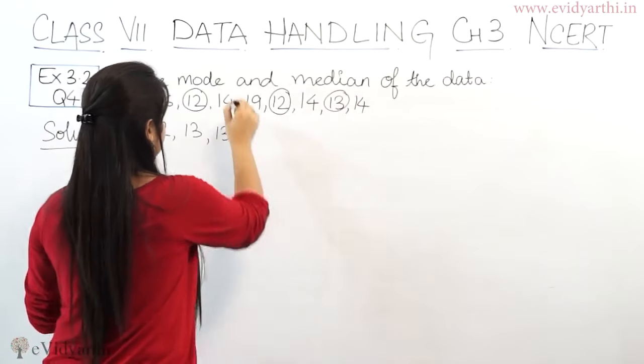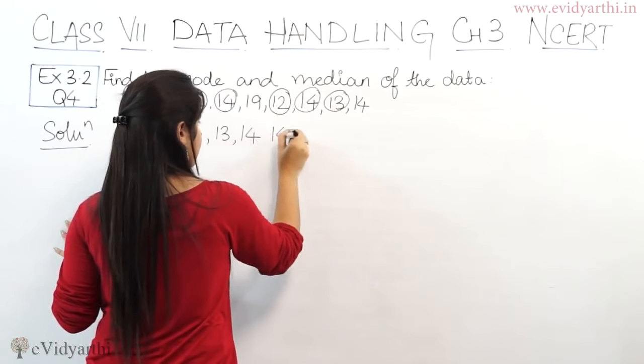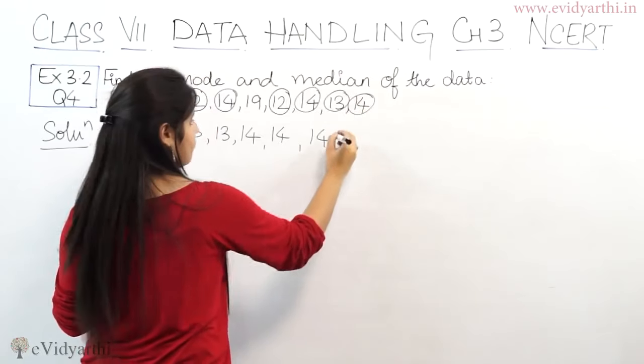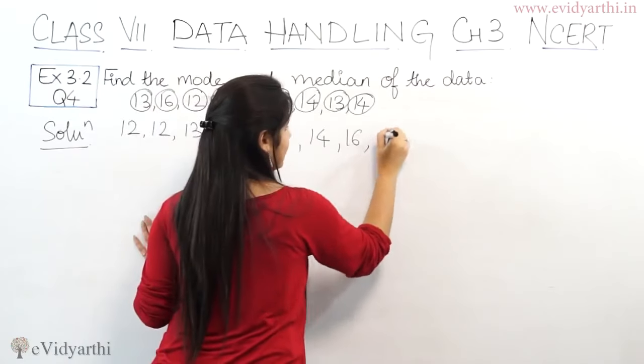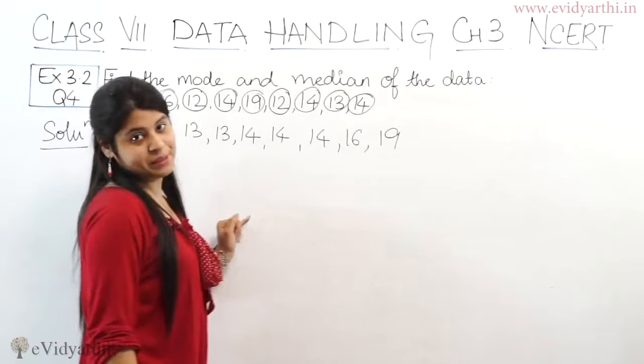Then we have 14 - one, two, three times. Then we have 16 and then we have 19. Okay? So we have arranged this data in ascending order.